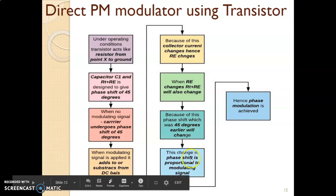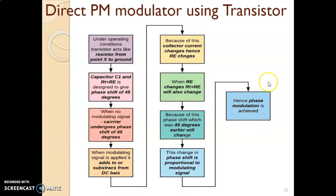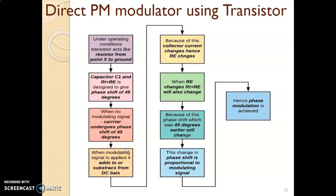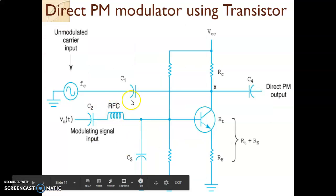This change in phase shift is proportional to current, and current is proportional to the modulating signal voltage. Hence, phase modulation is achieved. Here, the phase of the carrier signal is directly changing with the modulating signal, and because of that this is called direct phase modulation.